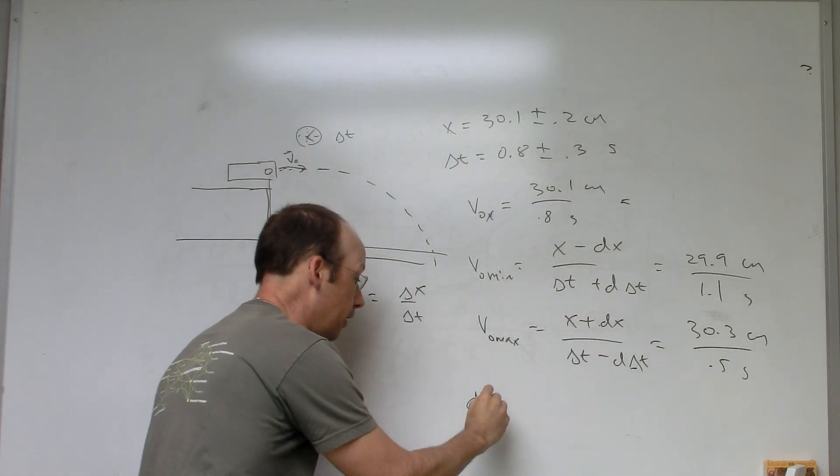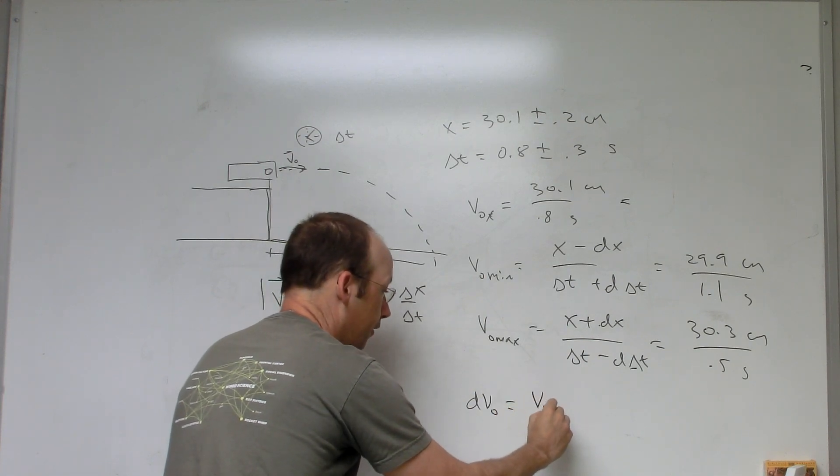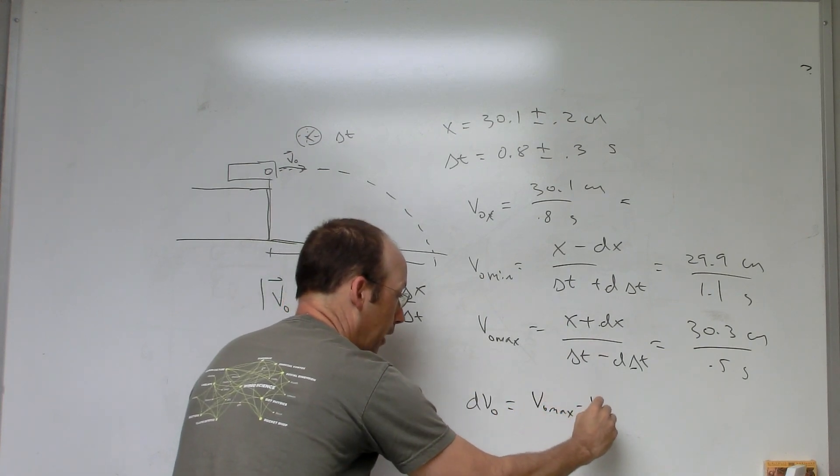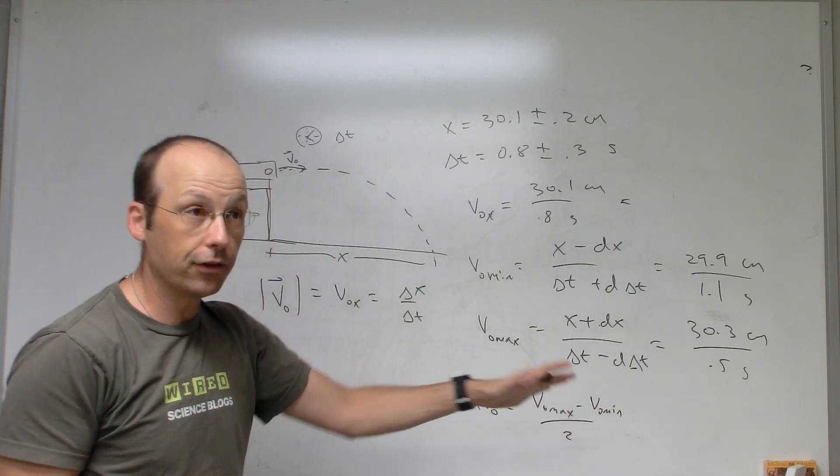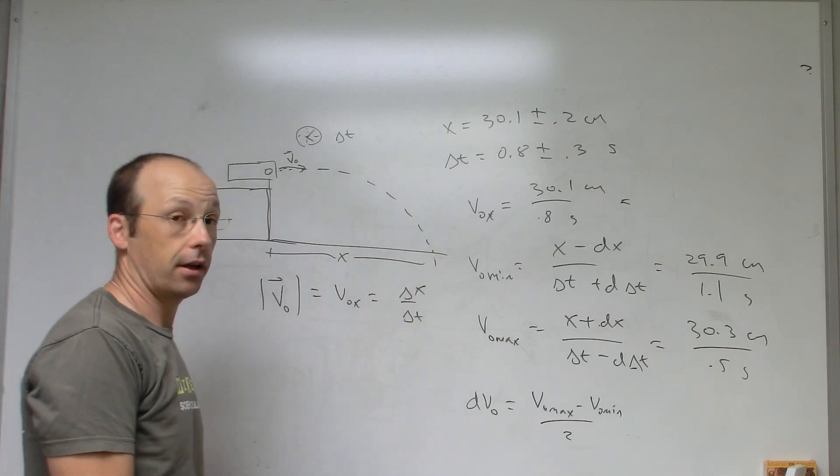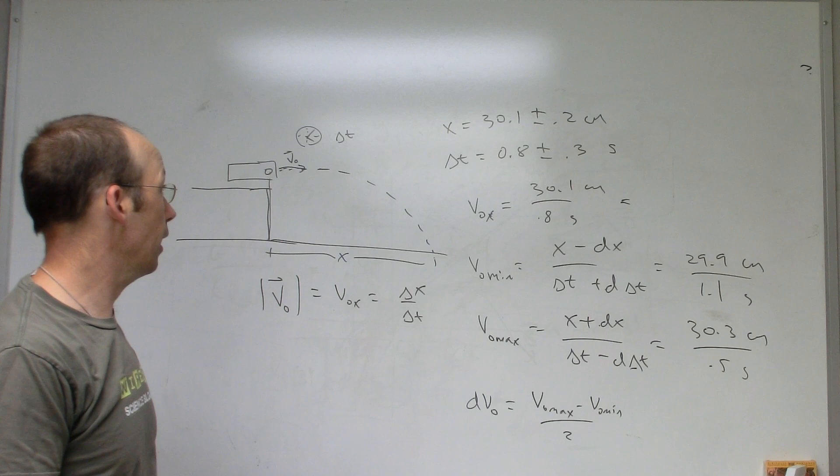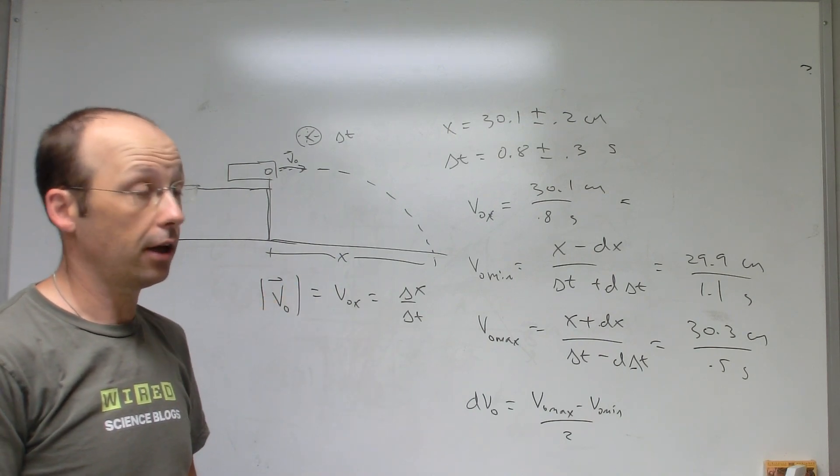Now to get my uncertainty in my velocity, dv0, it's just going to be v0 max minus v0 min over two. So this is kind of like averaging how much it is above and below this normal velocity right here. So you put your numbers in and that's it. That gives me my average velocity with uncertainty, which is super important in this case.